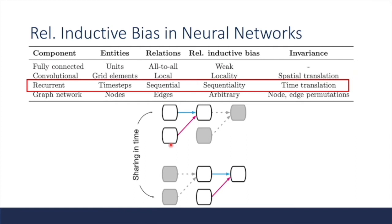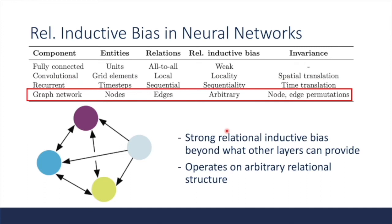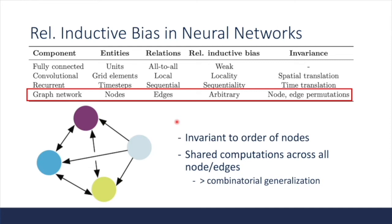Another common building block in neural nets is recurrent layers. We can consider the hidden state and input at each time step as entities, related by a recurrence relationship where the next hidden state is conditioned on the previous hidden state and input. Because the weights for computing the hidden states are reused across all time steps, we can view this as a relational inductive bias of temporal invariance. It also has a locality bias because of the Markovian assumption that the current state is only dependent on the previous state. Graph networks have explicit representations for entities as nodes and relationships as edges, providing strong relational inductive bias beyond what other layers can provide, and they are invariant to node permutations.